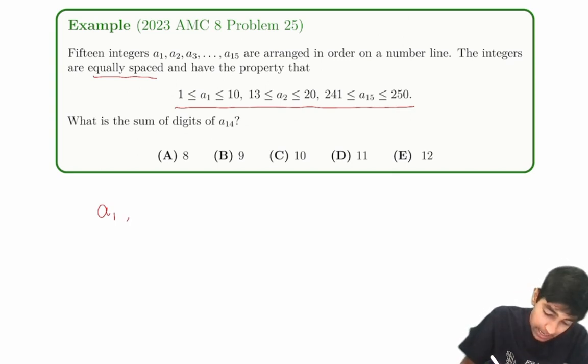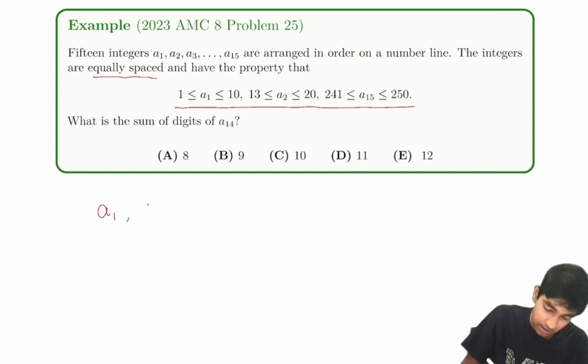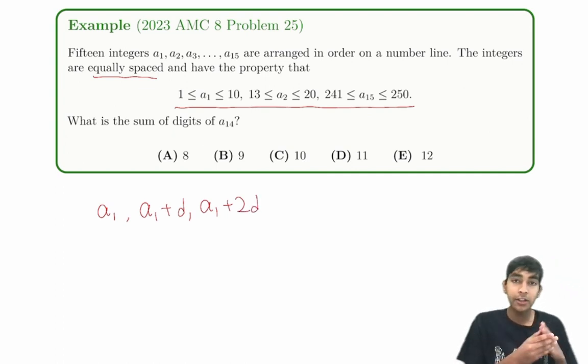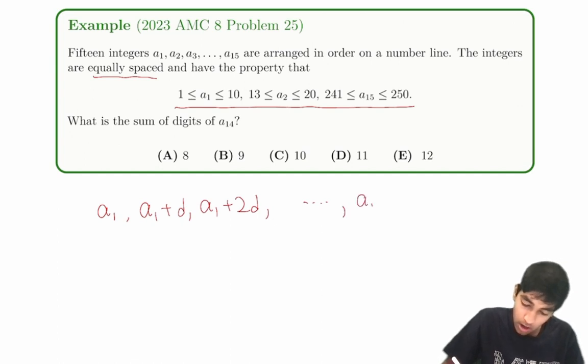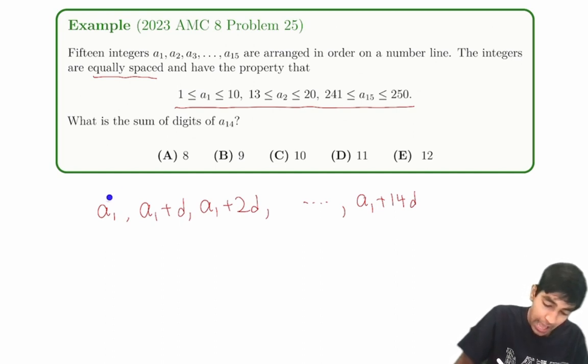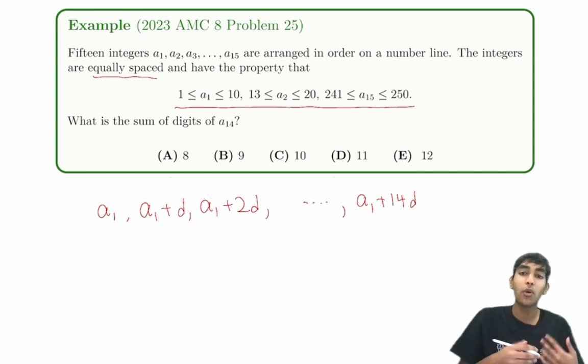So let's say we have a1. Because they're equally spaced, they form an arithmetic sequence. So a1, and then let's say that a1 plus some common difference, we can call it d. So a2 will then just be a1 plus d. And then a3 is a1 plus 2d, because they're equally spaced. This goes all the way to the 15th term, which will be a1 plus 14d, because there's 14 common differences between a1 and a15.